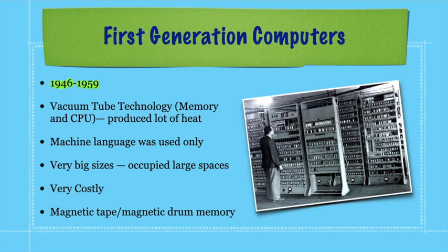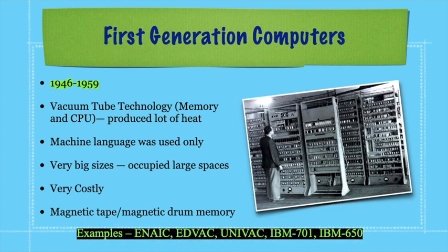In first generation computers, only machine language was used. They were very big in size, occupied more space, and were very costly, so only large organizations could afford them — they were not for personal use. Their memory used magnetic tape and magnetic drum. A direct question can come from here: which memory was used in first generation computers? The correct answer is magnetic drum memory. Examples include ENIAC, EDVAC, EDSAC, UNIVAC, IBM 701, and IBM 650.